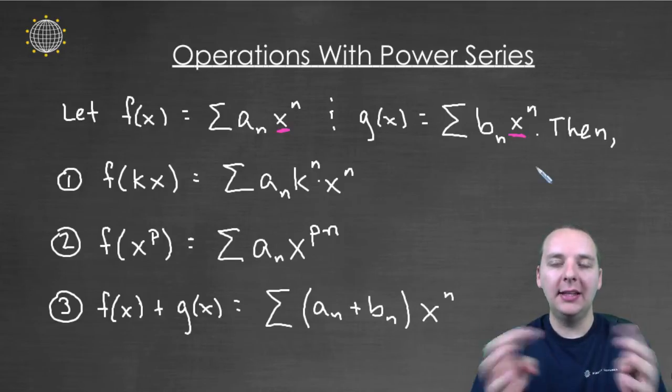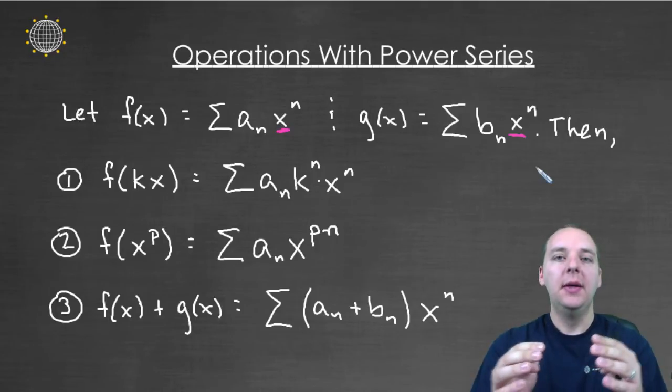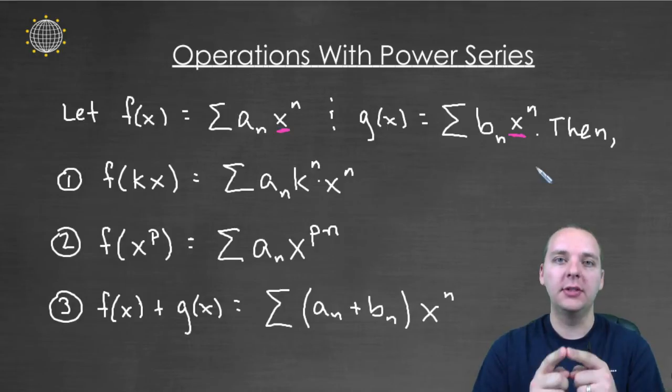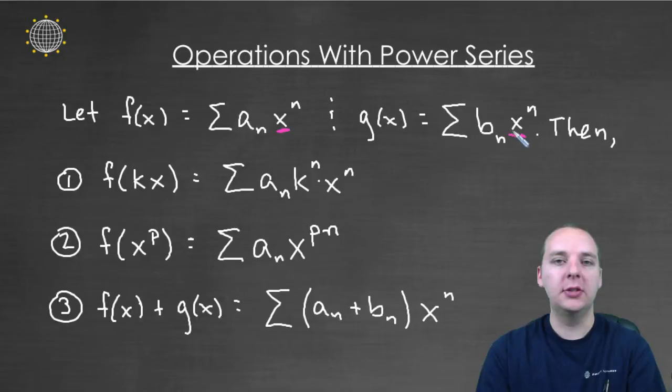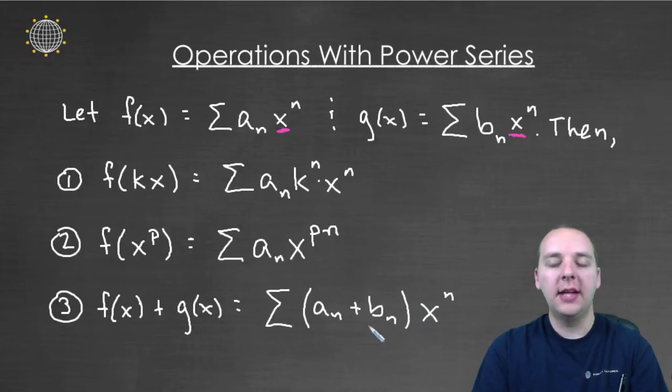If you're adding these guys together, which are themselves summations, then you can take the like terms for each and combine them together. For example, the x squared term with the x squared term, the x cubed term with the x cubed term. Since you have x squared with x squared and x cubed with x cubed and so on, for both of these terms then you'll have a common factor of x^n that you can factor out and really just add the coefficients together.